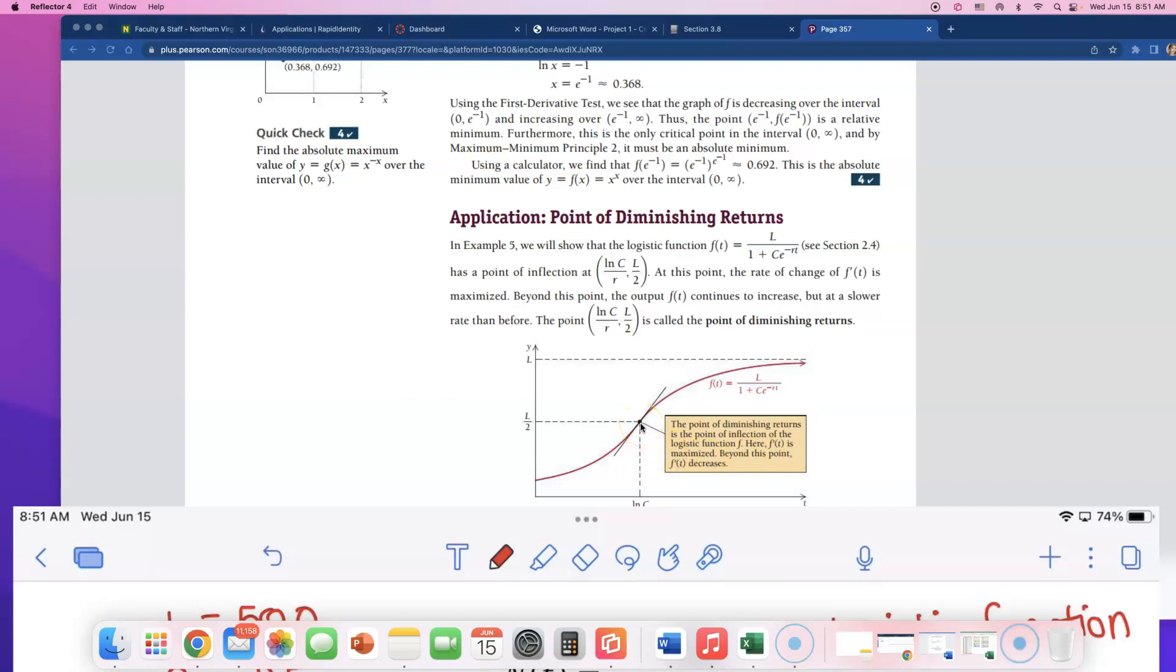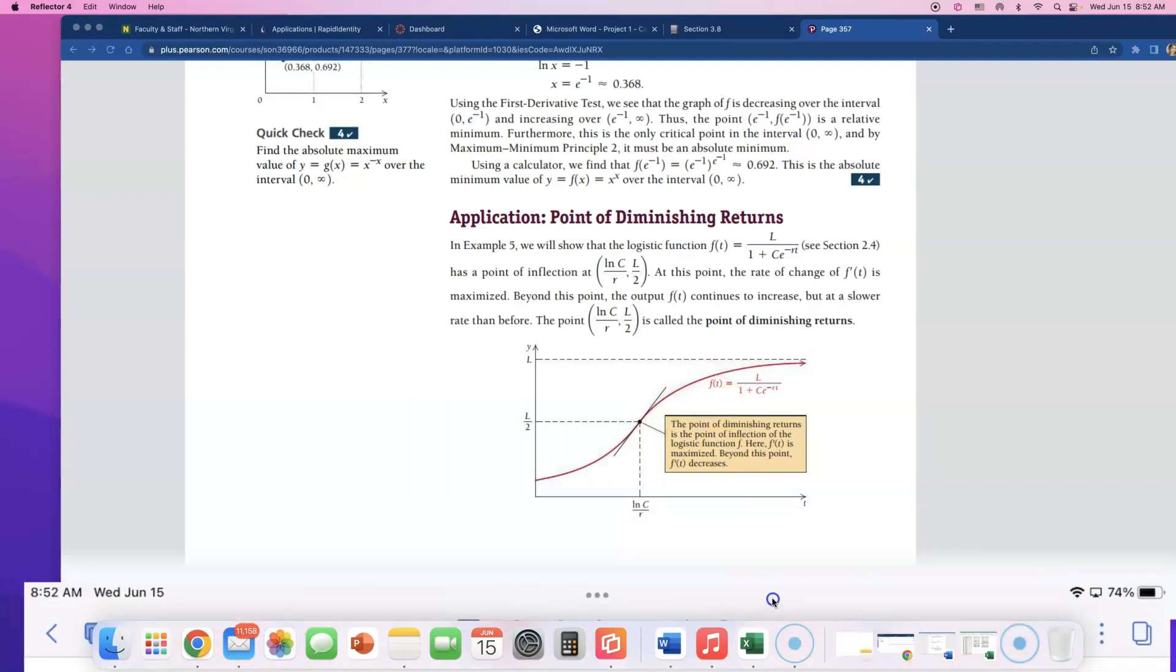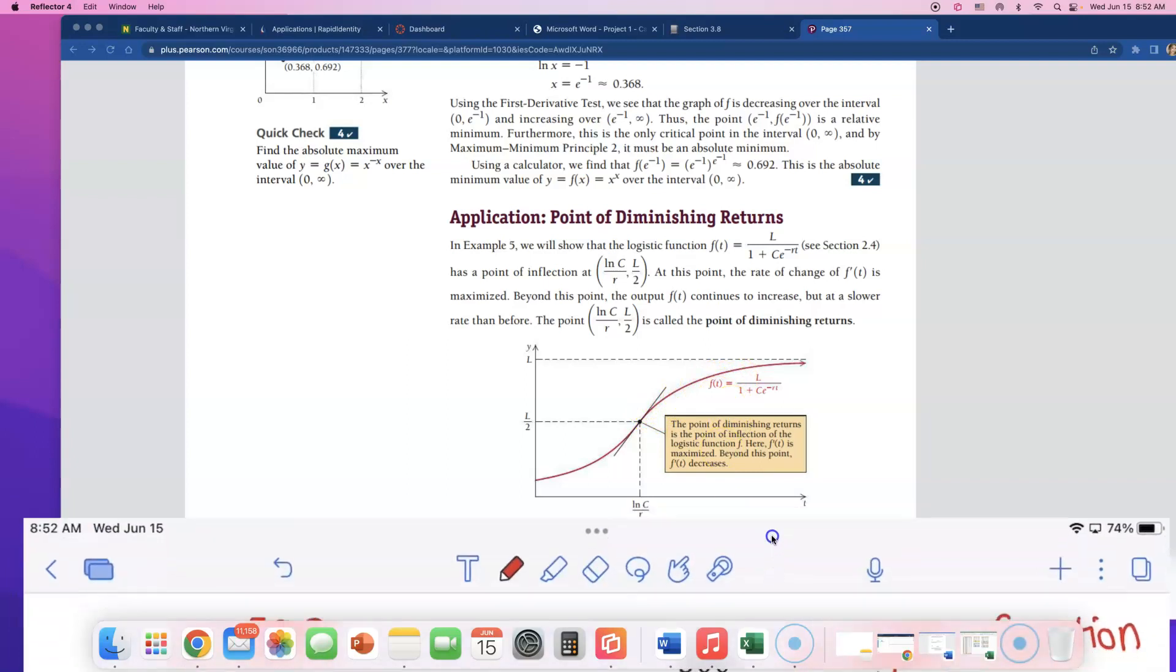The rate is maximized at this point. Beyond this point, f prime of t decreases. So in our situation, what's happening is the rumor is spreading faster and faster. But when we hit this point, the rumor will be spreading at a slower rate. This is exactly the point that we want to find for this problem. And to find this point, you just need this formula.